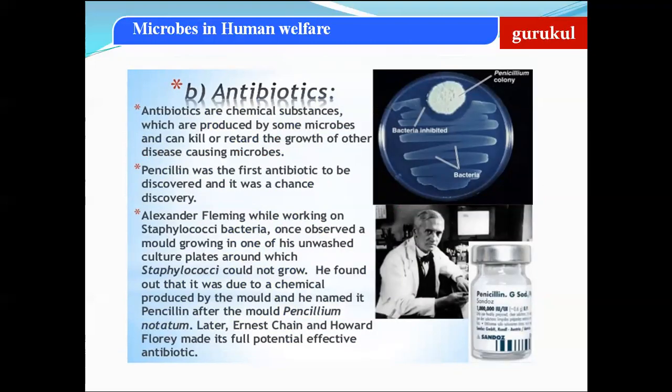The second industrial use is the production of antibiotics. Antibiotics are chemical substances produced by some microbes that can kill or retard the growth of other disease-causing microbes. The first antibiotic discovered was penicillin, discovered by chance by Alexander Fleming when he was working on a bacteria called Staphylococcus.